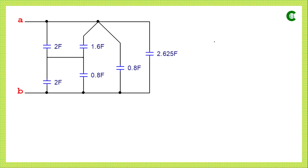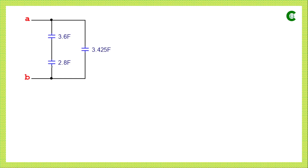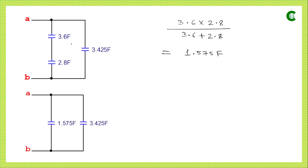For parallel connection of capacitors, the values are simply added. So the equivalent capacitance of the 2F and 1.6F pair is 3.6 farad, for the 2F and 0.8F pair it is 2.8 farad, and for the 0.8F and 2.625F pair it is 3.425 farad. In the next modified circuit, the 3.6F and 2.8F capacitors are connected in series, and 3.425F is connected in parallel with that series combination. First we simplify the series part: the equivalent capacitance is 1.575 farad.